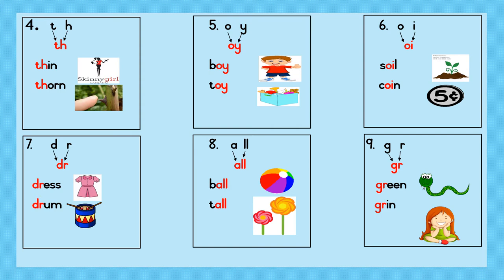Example 7. D-r-dr. Dr-ess: dress. Sentence: The girl has a lovely dress. Dr-um: drum. Sentence: The boy likes to play with his drum.